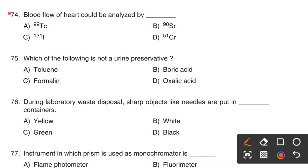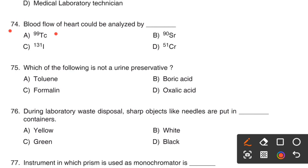Next question. Blood flow of the heart could be analyzed by: Option A, Technetium-99. Option B, Strontium-90. Option C, Iodine-131. Option D, Chromium-51. Blood flow of the heart could be analyzed by Technetium-99. The right answer is Option A, Technetium-99.